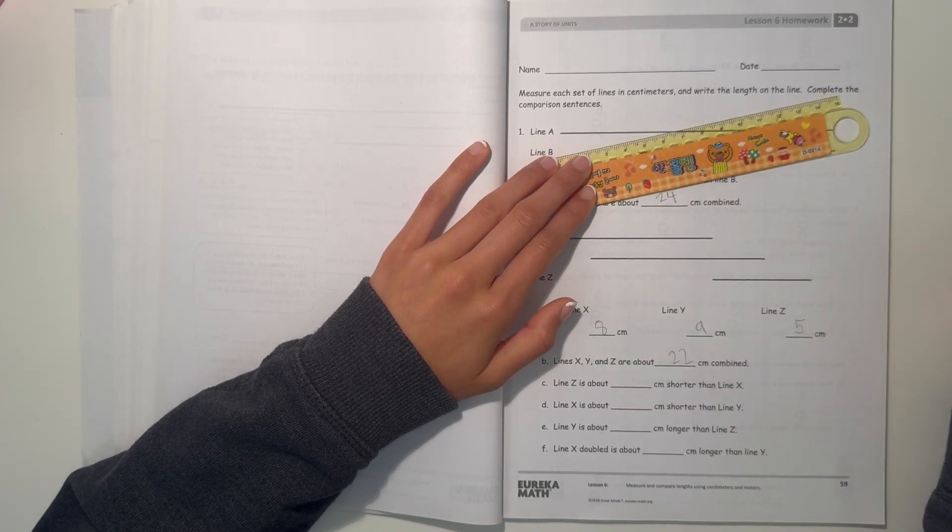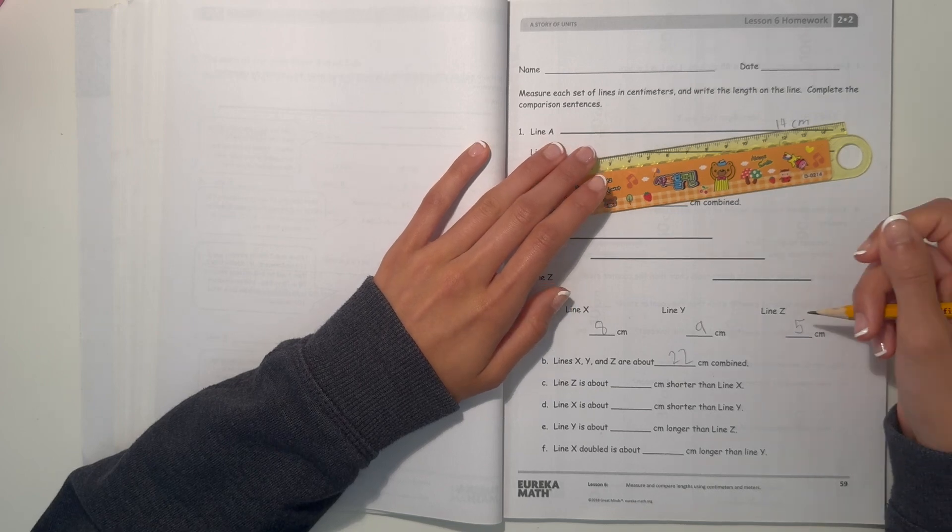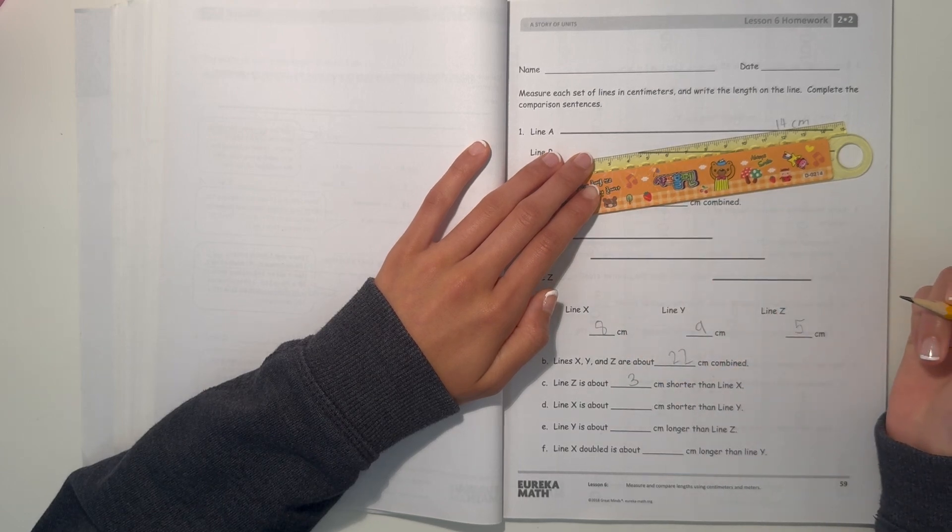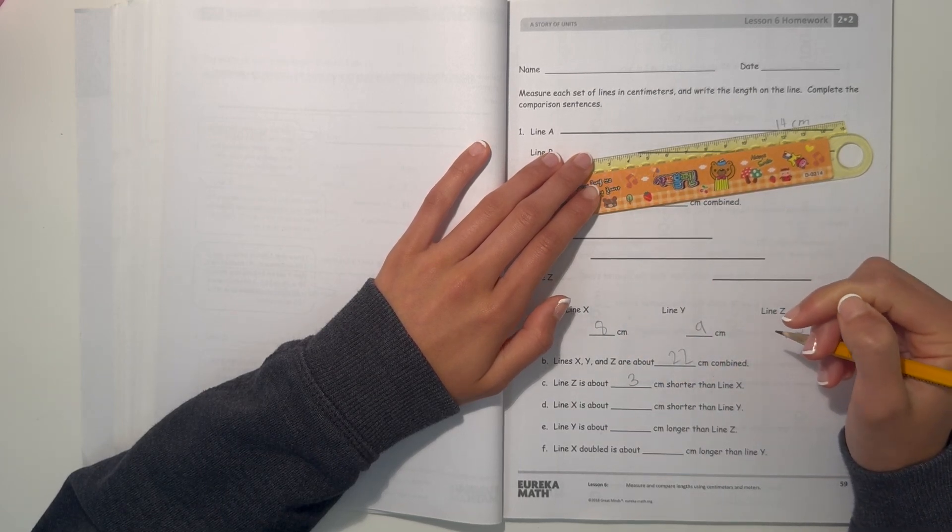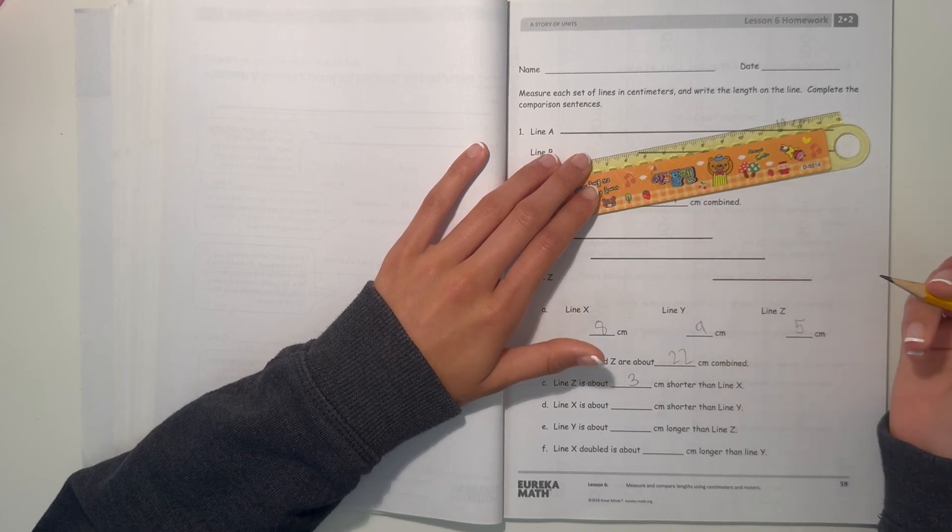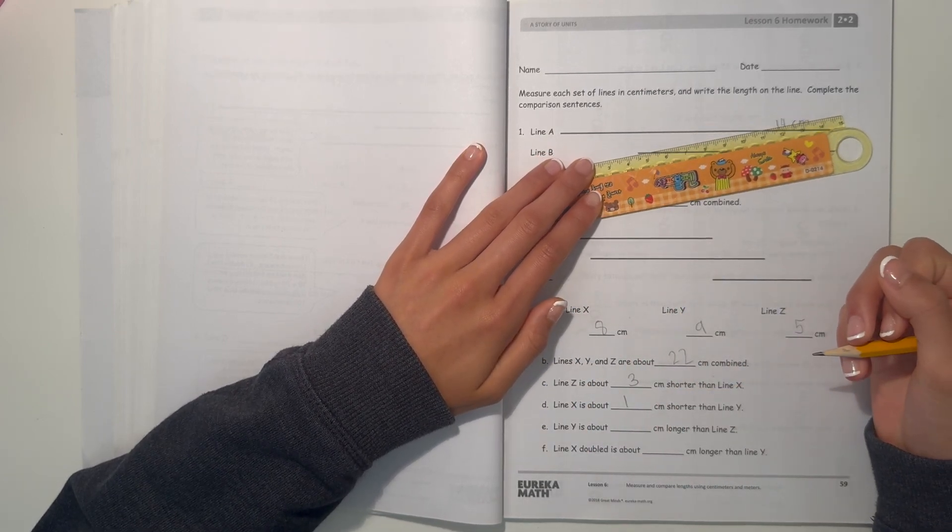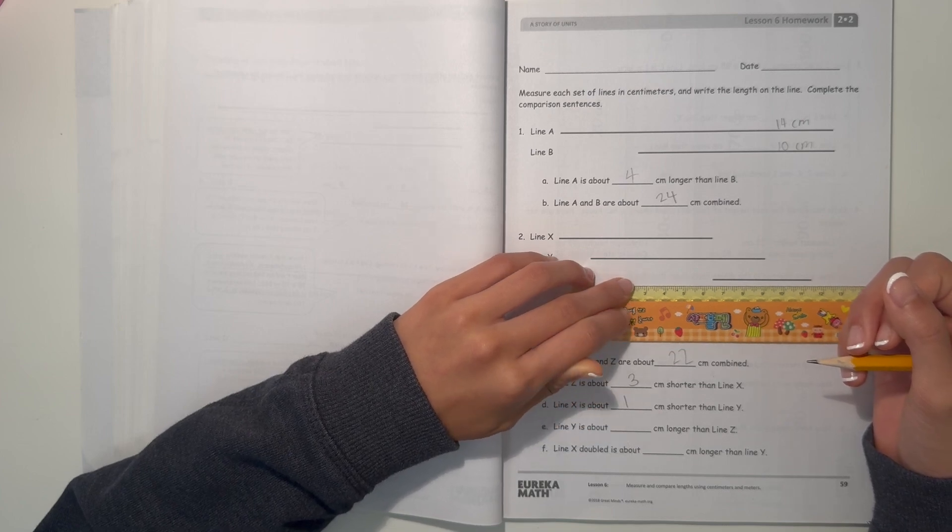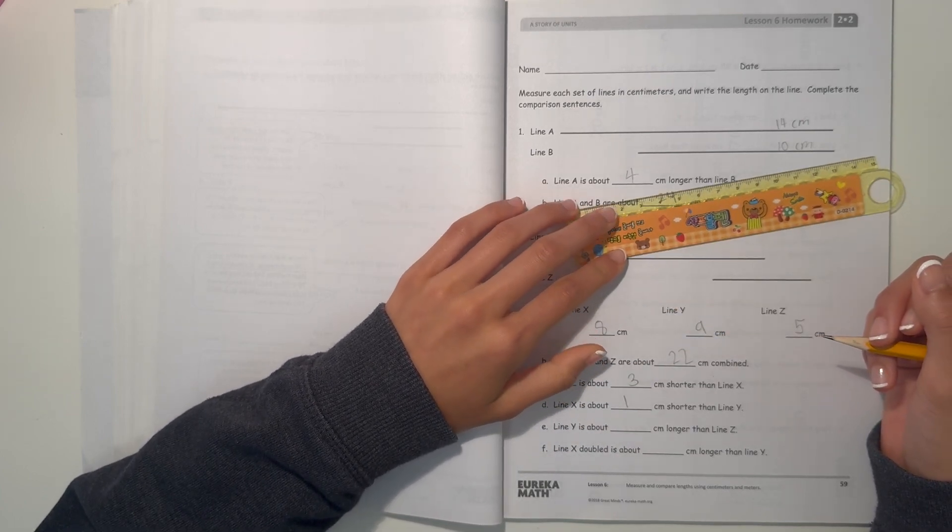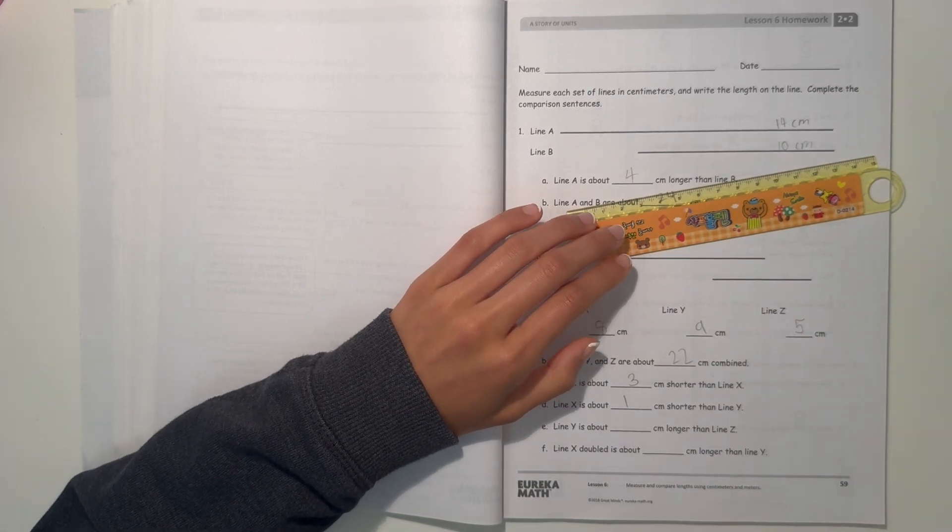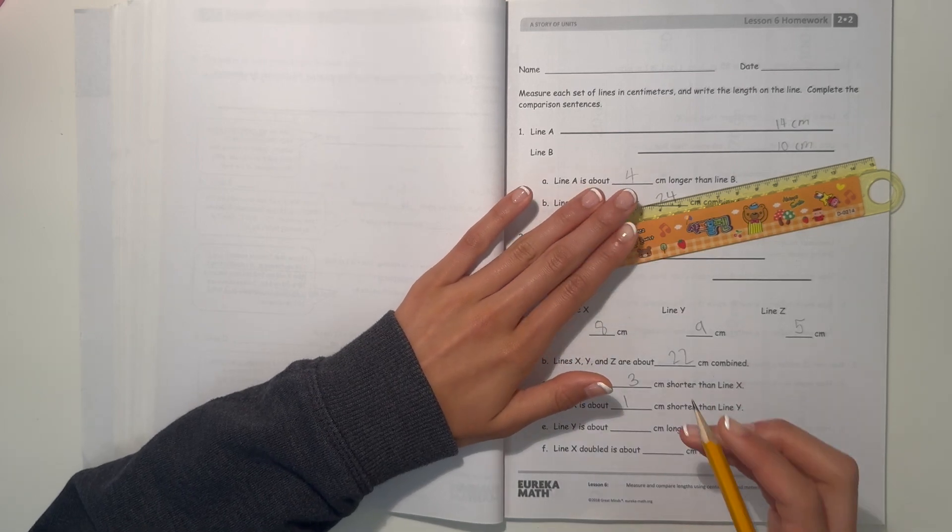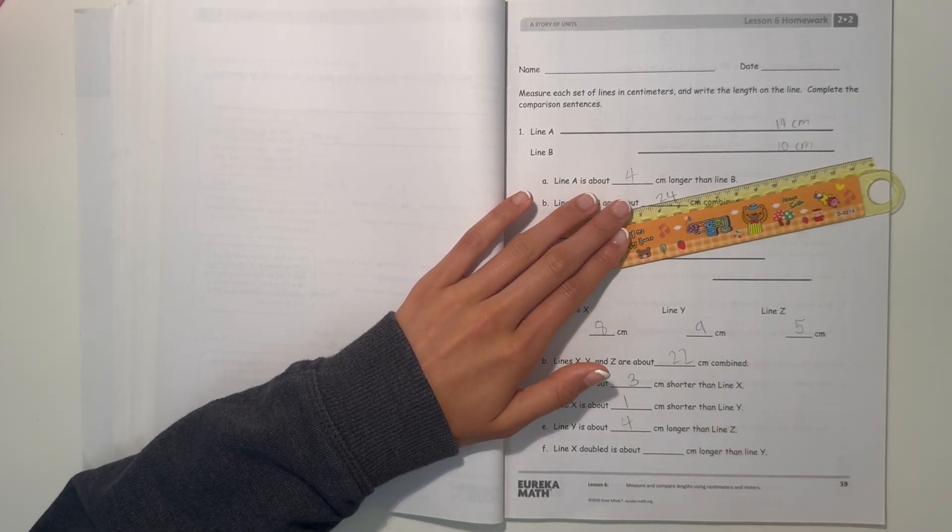And line Z is about blank centimeters shorter than line X. So 8 minus 5 is 3. So line Z is about 3 centimeters shorter. And line X and line Y, 9 minus 8 is 1. So line X is about 1 centimeter shorter than line Y. Now it says line Y is about blank centimeters longer than line Z. So Y, 9 minus 5 is 4. So line Y is 4 centimeters longer than line Z.